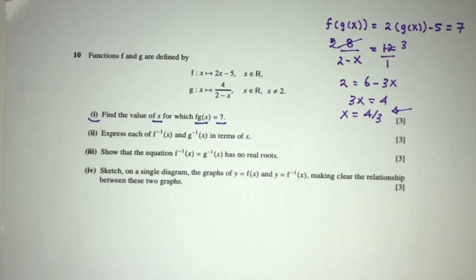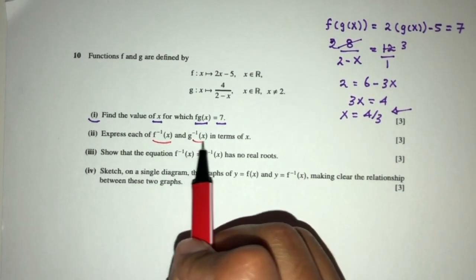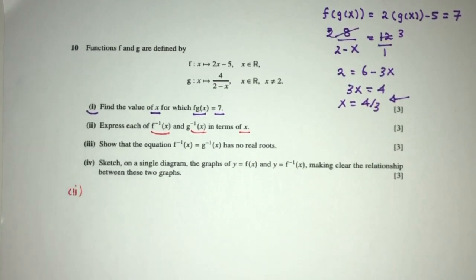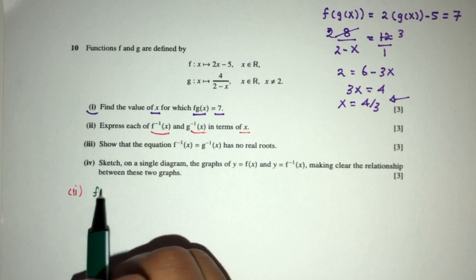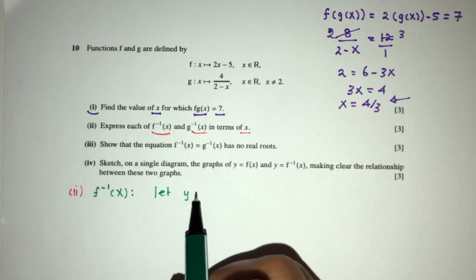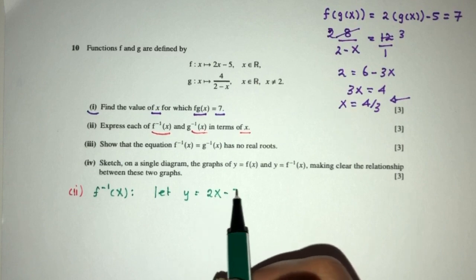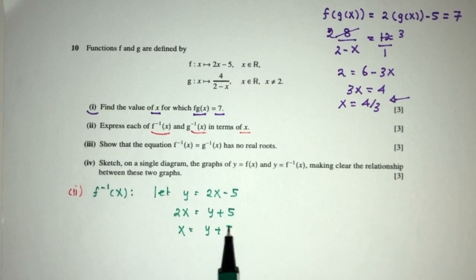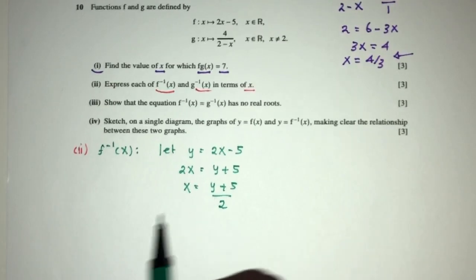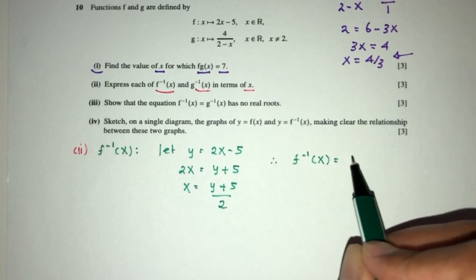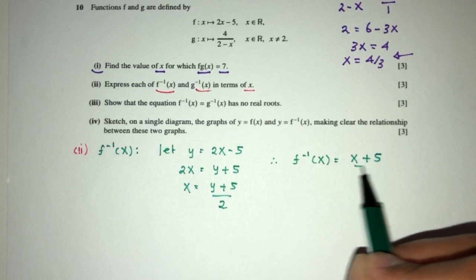For part 2, we have to express f inverse and g inverse in terms of x. So f inverse of x: we first let y = f(x), which is 2x - 5. Then make x the subject. So 2x = y + 5, so x = (y+5)/2. Here we conclude f inverse is x plus 5 divided by 2.